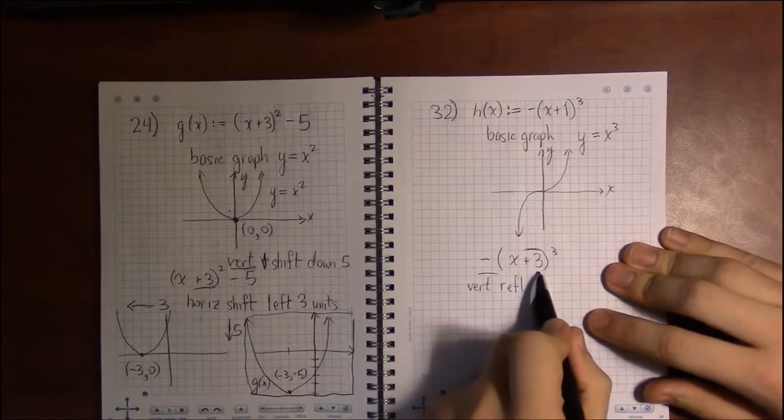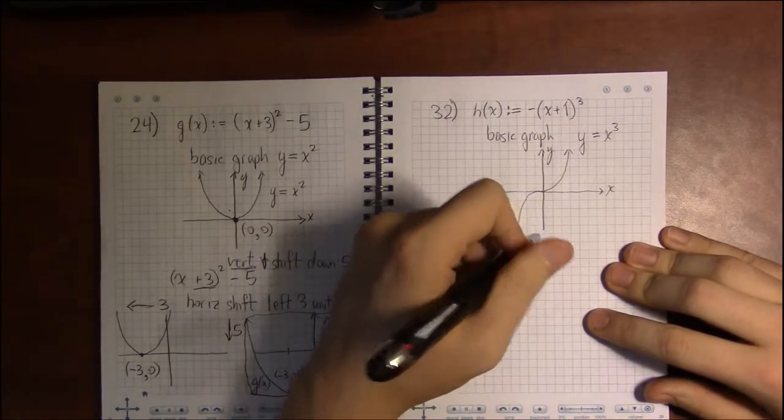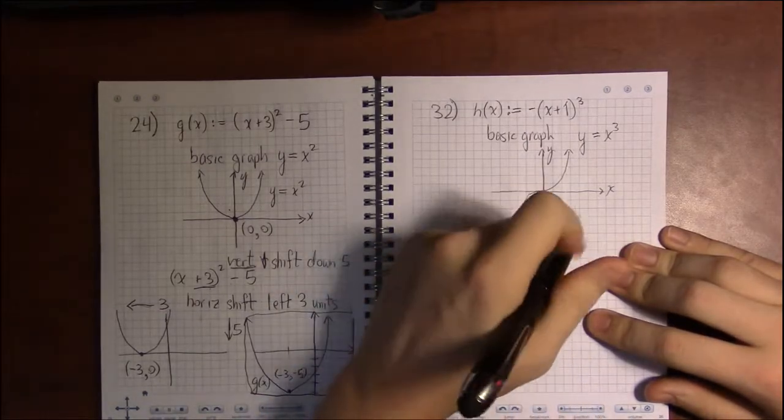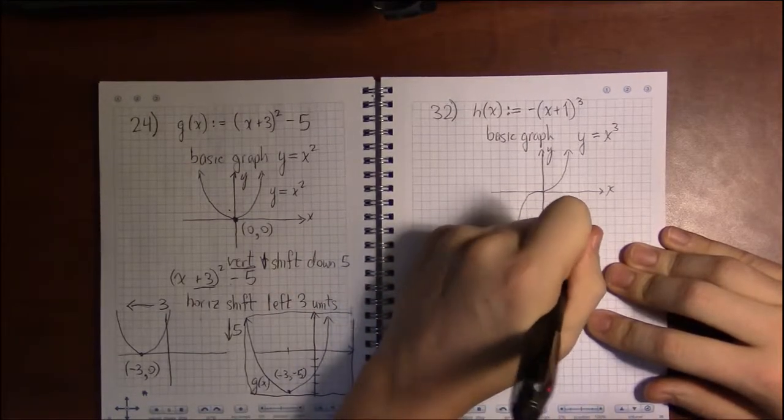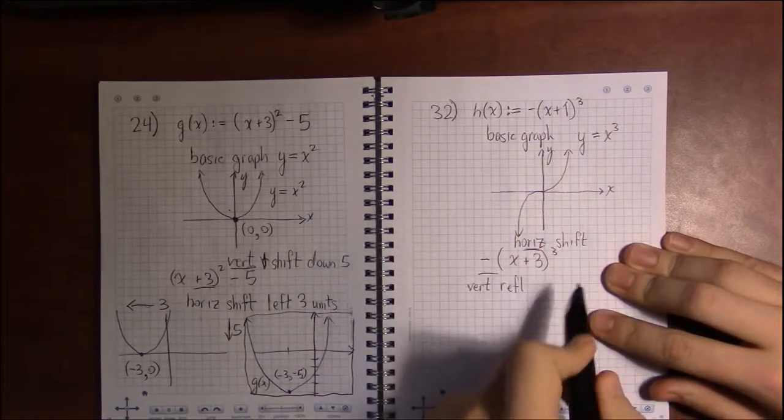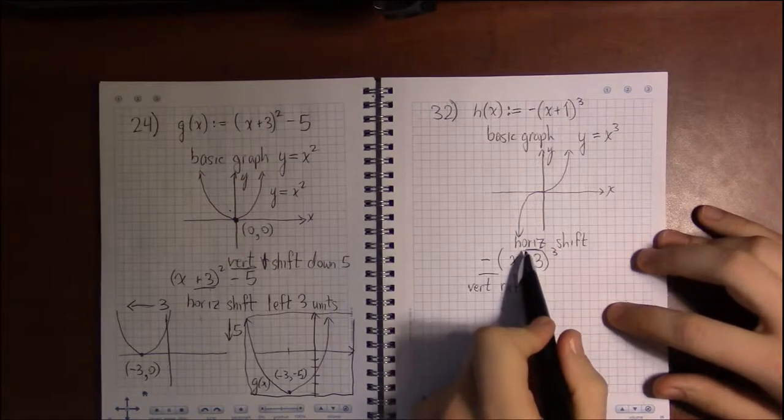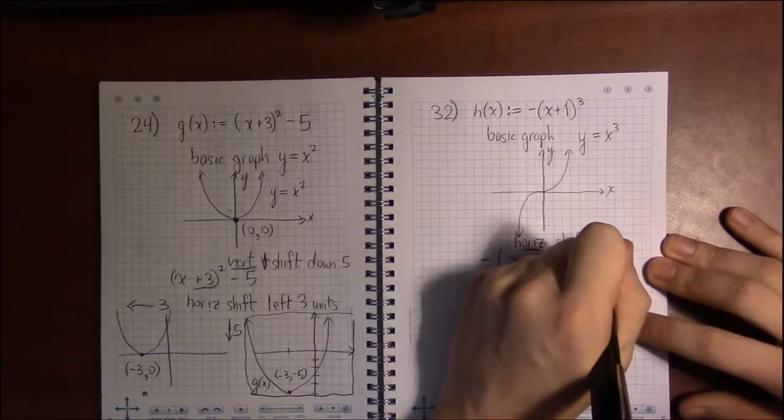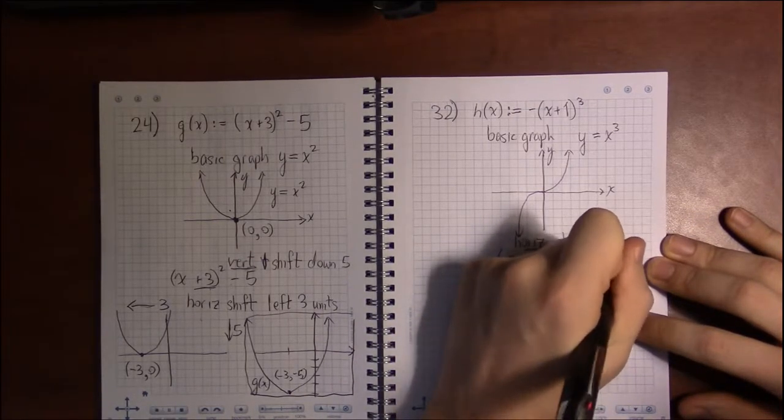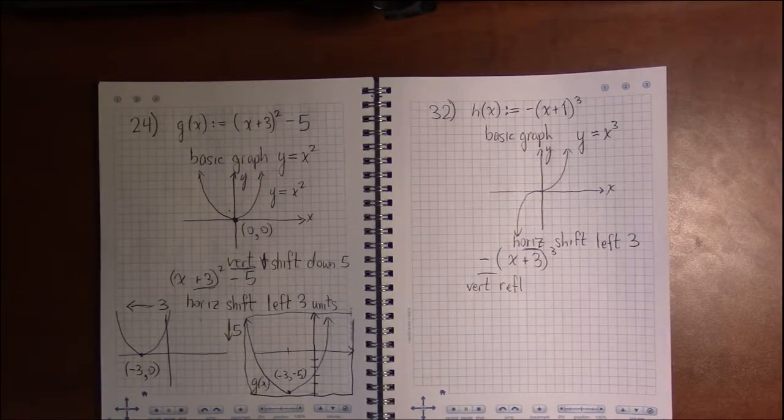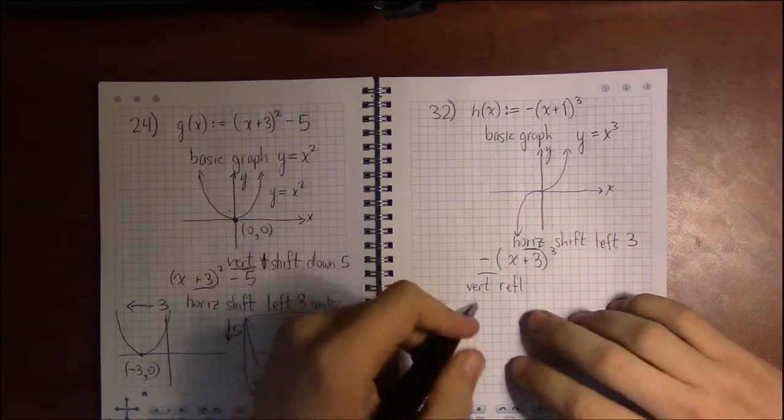So this is a vertical, and multiplying by a negative is a reflection. So this is a vertical reflection. And then the plus 3, that's as close to the x as it can get, so it's horizontal. It's being added to x, which makes it a shift. Now left or right? Well, I would think this would go right 3, but it's horizontal, so it's the opposite. It's left 3. And again, if you want, you can do these one at a time.